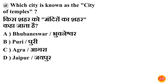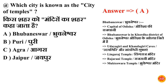Next question: which city is known as the City of Temples? Kis shahar ko mandiron ka shahar kaha jata hai? Option A is correct — Bhubaneswar. Bhubaneswar ko mandiron ka shahar kaha jata hai. Odisha ki rajdhani hai Bhubaneswar, jo Khurda jile mein sthit hai. Udayagiri aur Khandagiri caves bhi Bhubaneswar mein hain. Lingaraj Mandir aur Rajarani Mandir bhi Bhubaneswar mein sthit hain.